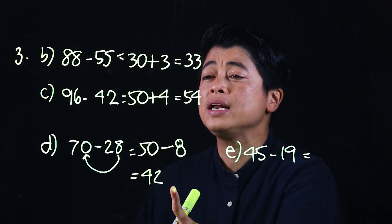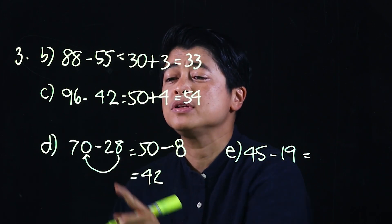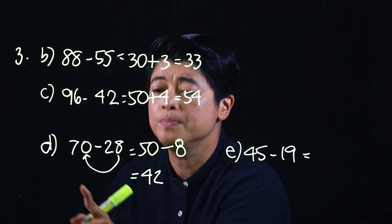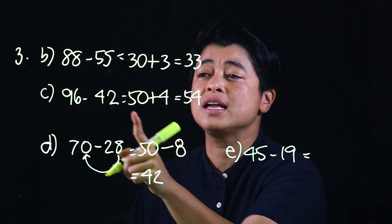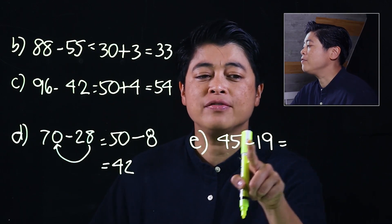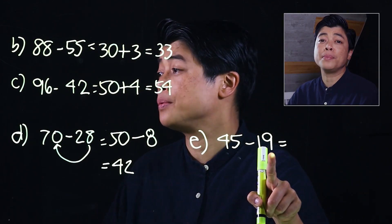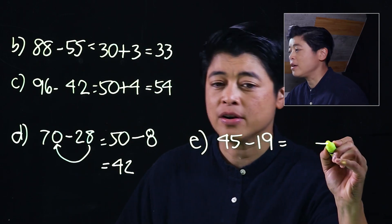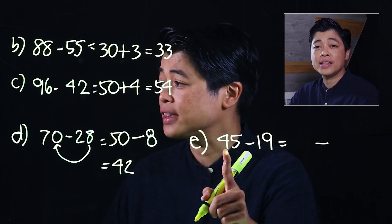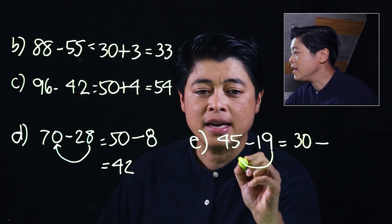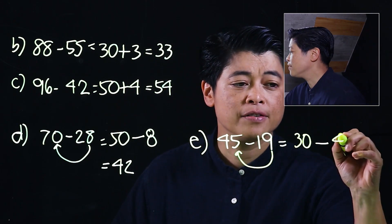We need to train our kids so they can see that if regrouping is needed, you subtract here instead of add. For the last problem, 5 minus 9 needs regrouping, so instead of a plus it will be a minus. We start with the tens: 40 minus 10 is 30, then 9 minus 5 is 4.